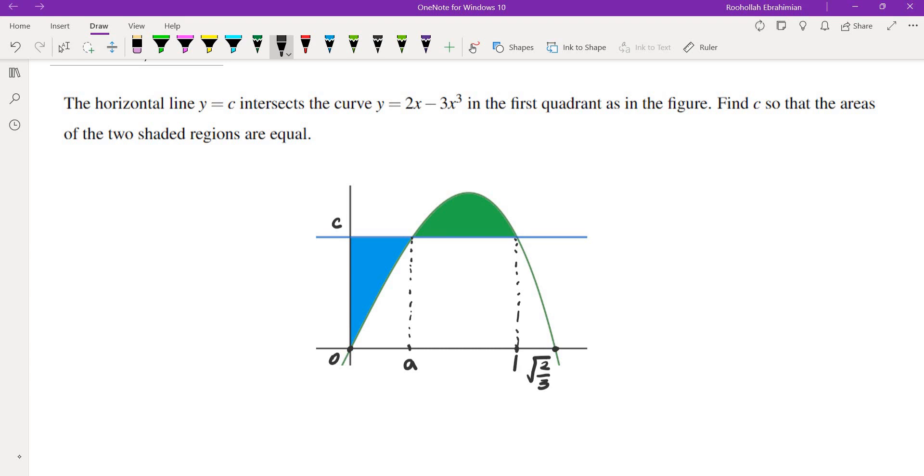In order to find the areas we need to find the intersection points, but it's not really easy to solve the cubic equation. Finding x when 2x minus 3x cubed equals c is not very easy.